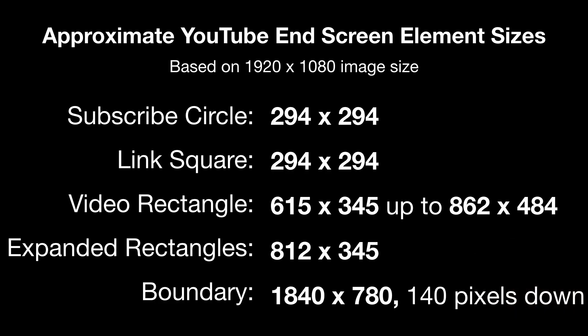Based on a screen size of 1920 by 1080: the subscribe circle should be 294 by 294, and so should the small square button for linking to your website. The video rectangles can range from 615 wide to 862 wide. The subscribe circle and link square can expand when you hover over them to a larger rectangle showing more information. The boundary for the entire area is 1840 by 780 approximately. It's centered left to right but not top to bottom — it's about 140 pixels from the top.